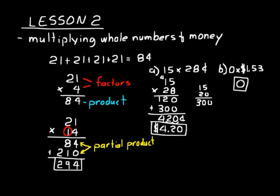Let's try one more multiplication problem — this one will be a little more complex. Let's do two hundred eight times thirty-three. It'll be easier to do it as two-oh-eight times thirty-three rather than thirty-three times two-oh-eight, because that way we only have to multiply twice instead of three times.